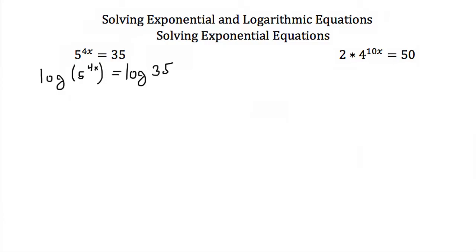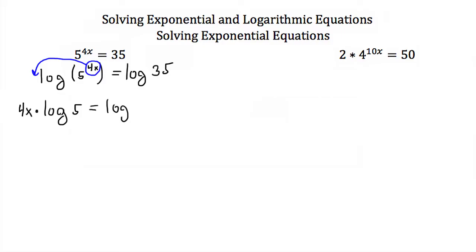Because of the power property of logs, the 4x in the exponent can be taken out and placed in front of the log. So this becomes 4x times the log of 5, and that's equal to the log of 35.